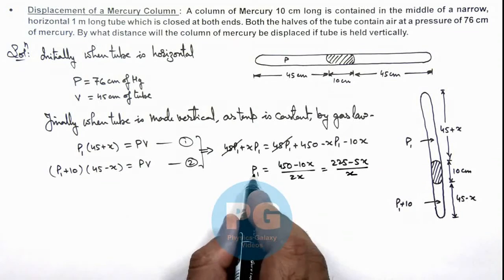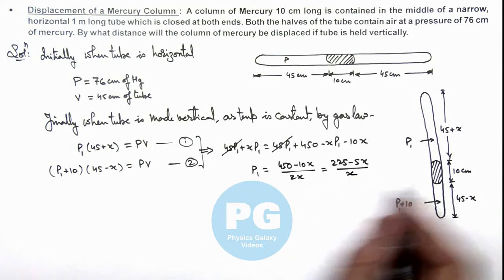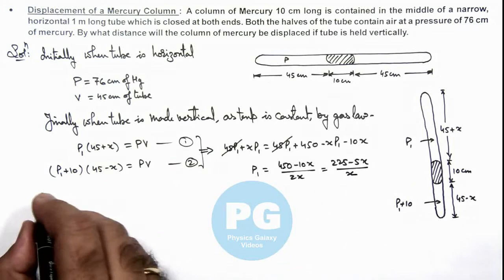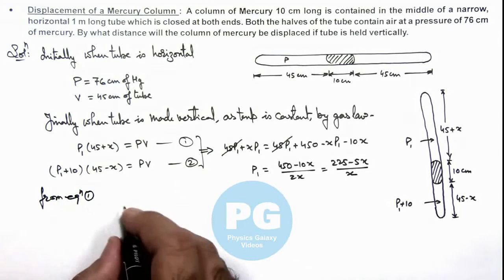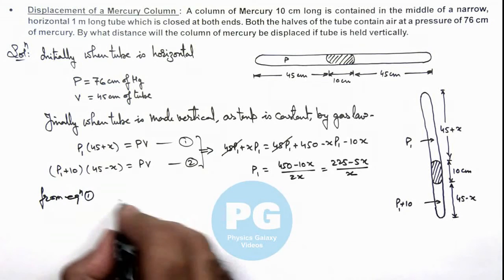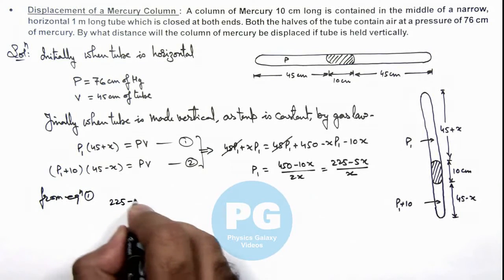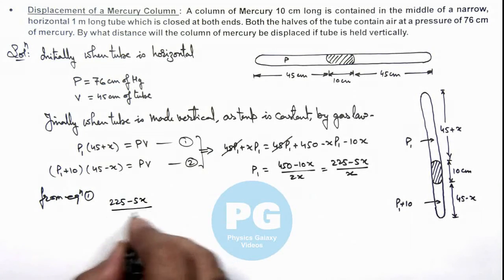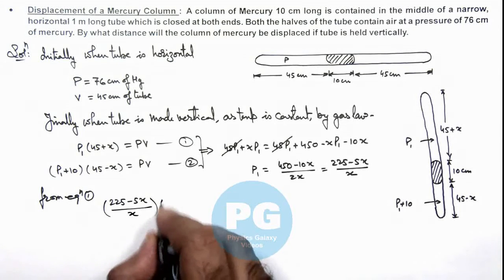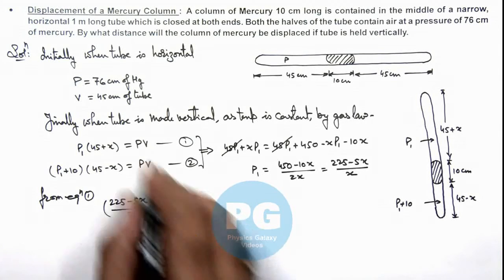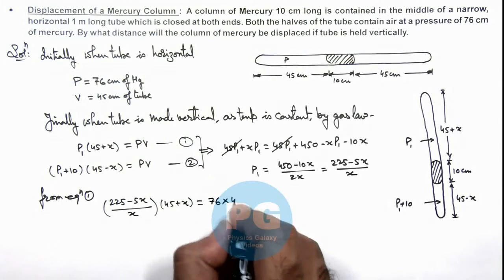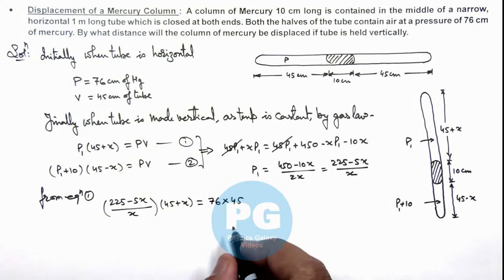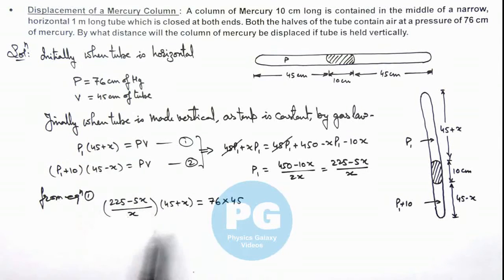So as we have got the value of p1 in terms of the displacement of this mercury column, we can use it in equation 1. So from equation 1 we can write the value of p1 here is 225 minus 5 x by x multiplied by 45 plus x is equal to p v, the values we are already having, 76 multiplied by 45.